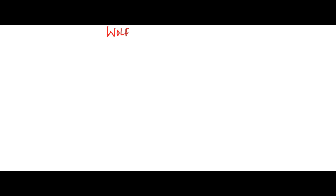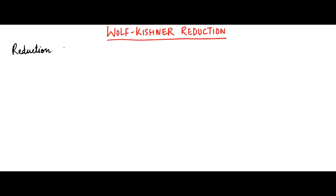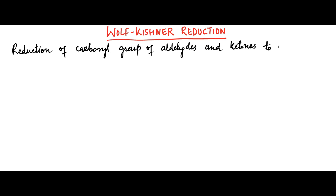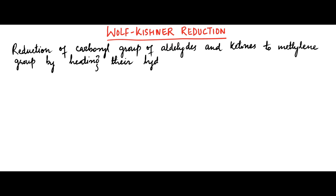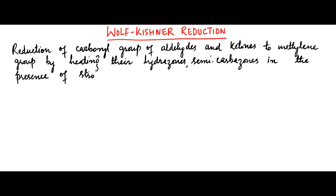In this lecture, we will discuss Wolf-Kishner reduction of aldehydes and ketones. It can be defined as reduction of the carbonyl group of aldehydes and ketones to a methylene group by heating their hydrazones or semicarbazones in the presence of a strong base.